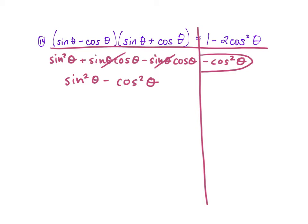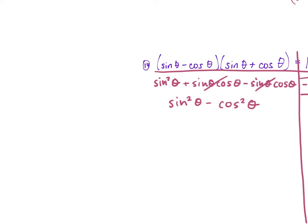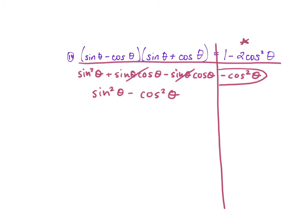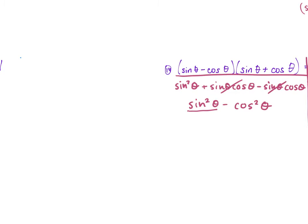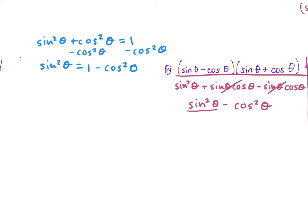What can we do next? Sine² θ equals 1 minus cosine² θ. Our answer is in terms of cosine, so we want to change the sine. Our identity is sine² θ plus cosine² θ equals 1. We rearrange to get sine² θ equals 1 minus cosine² θ, and plug that in: 1 minus cosine² θ minus cosine² θ.